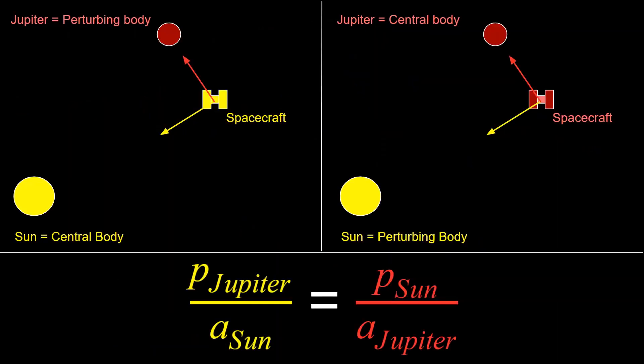Here we are using the Voyager 2 spacecraft doing a flyby of Jupiter, and we have two different scenarios. On the first one on the left, we are modeling the Sun to be the central body, and Jupiter is a perturbing body. In this case, we have some acceleration due to the Sun as a central body, and some perturbation from the gravity of Jupiter. In the case on the right, we model Jupiter as a central body, and then the perturbation is coming from the Sun's gravity.